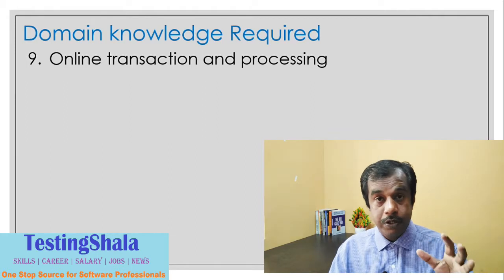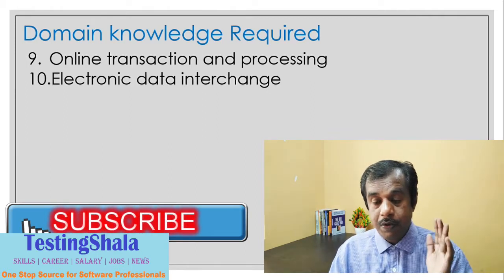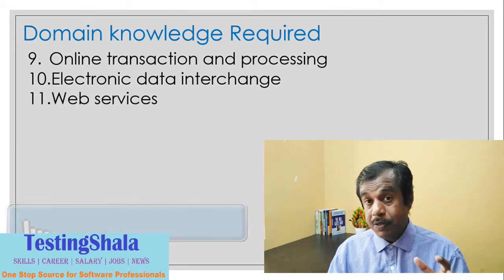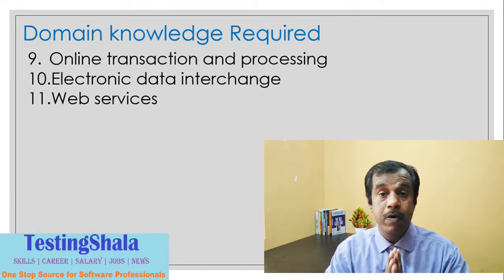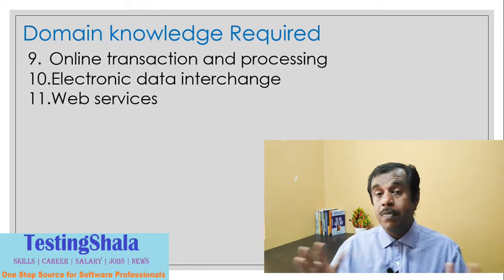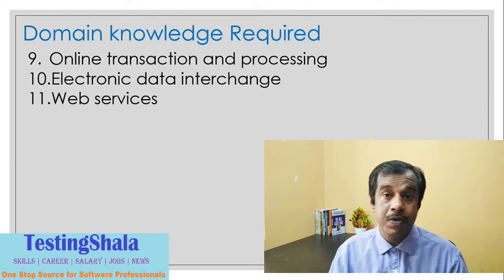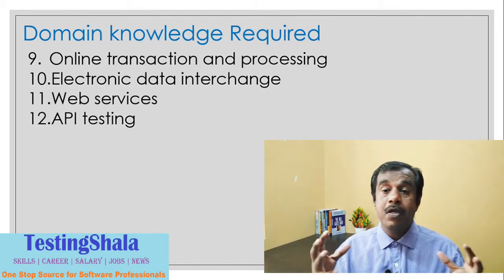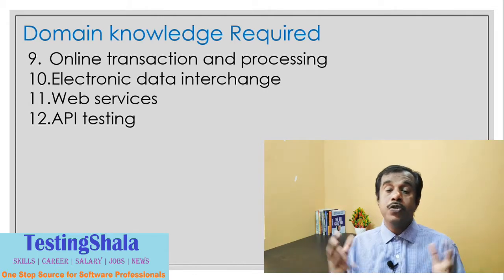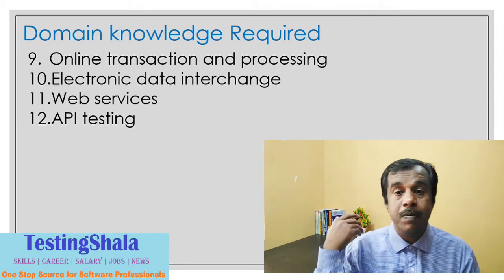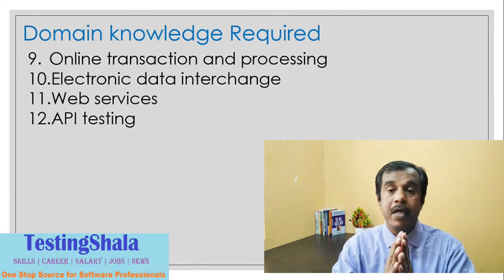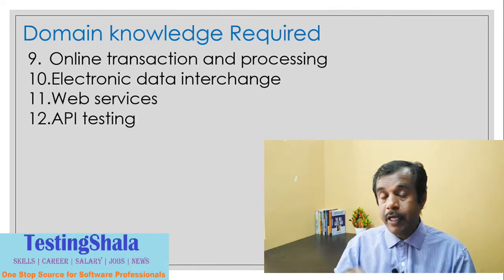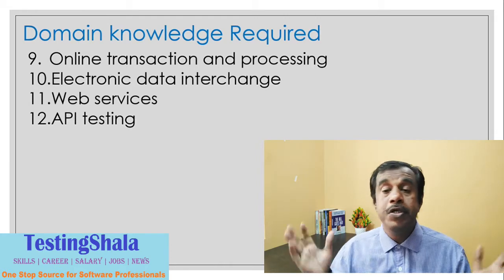Ninth is online transaction processing — everything done online you should know. Tenth is electronic data interchange (EDI) — from one integration to another. Eleventh is web services, because these days Amazon supports all web services and people can access their application through different vendors using those services. Twelfth is API testing — Amazon or Flipkart exposes its own APIs so customers can customize and pump millions of records at one time from the backend using APIs. You should know how the APIs work, what different ways APIs are exposed, and how to test them as a tester when you want to test an e-commerce application.